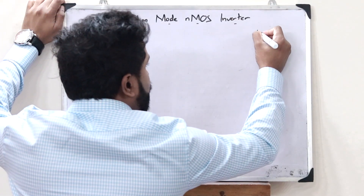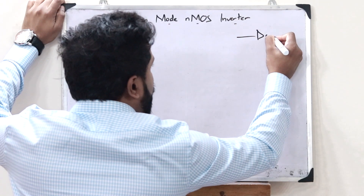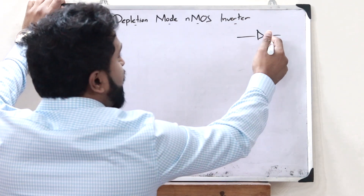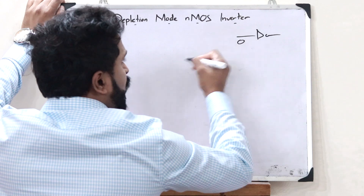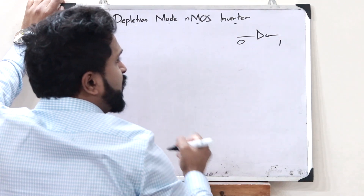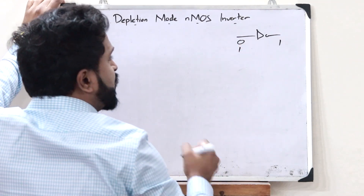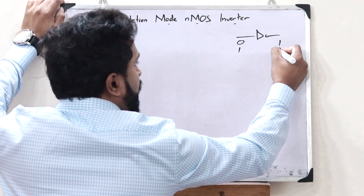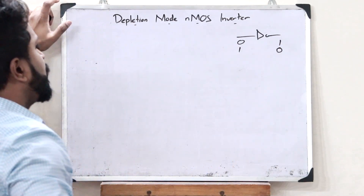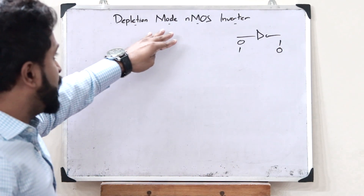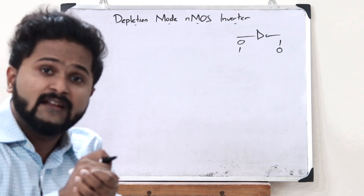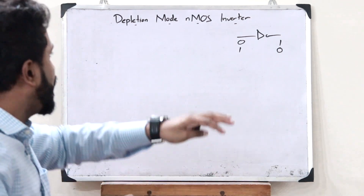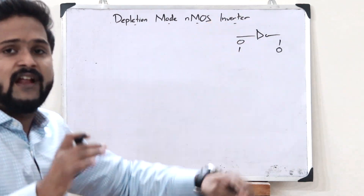An inverter is a device in which whatever input we give, we get the exact opposite as the output. That is, if we are giving 0 as the input, we will get 1 as the output. Or, if we are giving 1 as the input, we will get 0 as the output. So, in the case of a depletion mode NMOS inverter, we are constructing an inverter with the help of NMOS transistors.